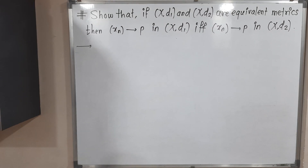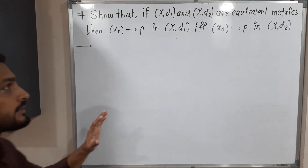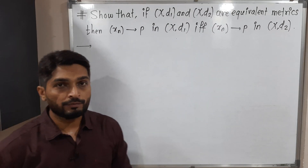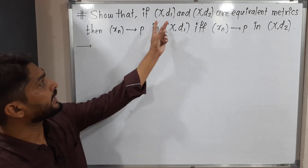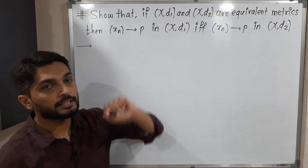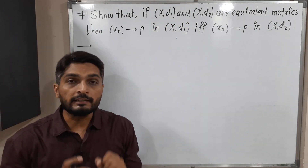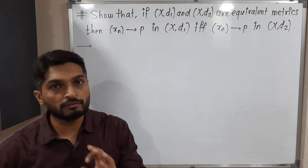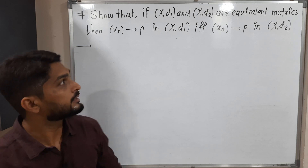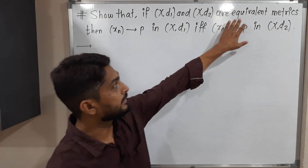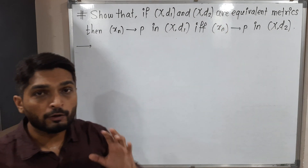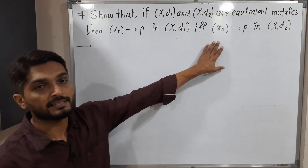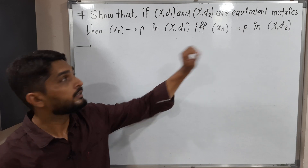Hi everyone. In this video we are going to discuss this theorem. So what we have, we have two metrics D1 and D2. The given information is both are equivalent metrics. This is the given thing and we have to prove that these two statements are equivalent.